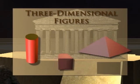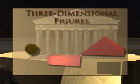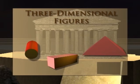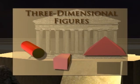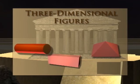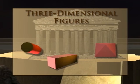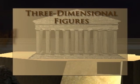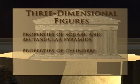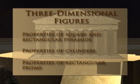Beyond the Platonic Solids are many different three-dimensional shapes. In this program, you will explore the properties of three-dimensional figures. Understanding the properties of these figures helps us understand certain natural and man-made structures that share these properties. In particular, this program will cover the following key concepts: the properties of square and rectangular pyramids, the properties of cylinders, and the properties of rectangular prisms.